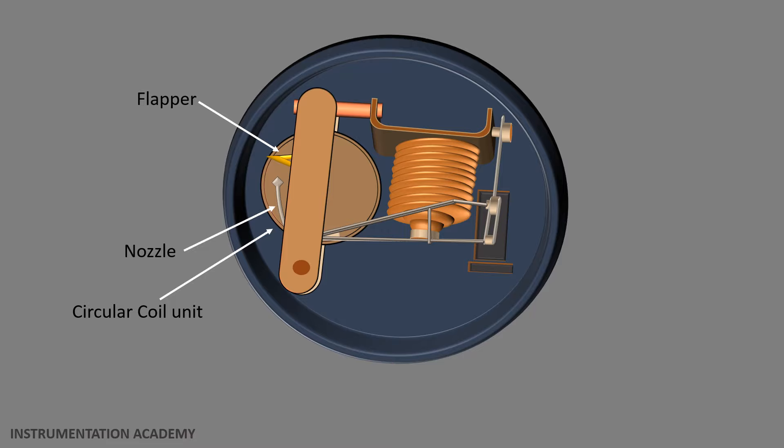As electric current passes through the coil, it produces a magnetic field which generates a torque. This torque causes the coil unit to rotate counterclockwise. As the flapper is located on the surface of the coil unit, the flapper also moves in response to current. The more current through the coil, the more the coil unit moves.